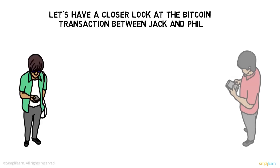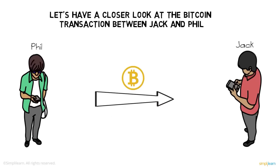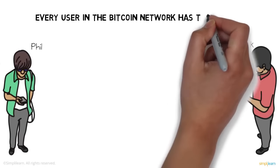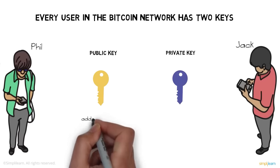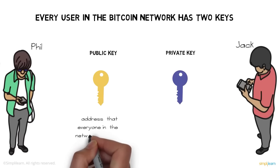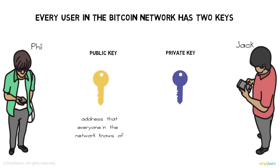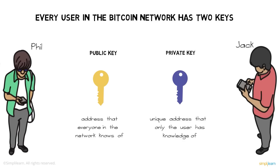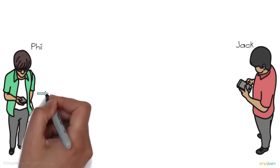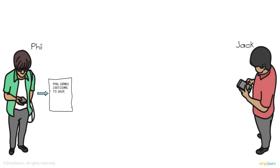Now let's have a closer look at the Bitcoin transaction between Jack and Phil. Every user in the Bitcoin network has two keys: a public key and a private key. The public key is an address that everyone in the network knows, like an email address. The private key is a unique address only the user has knowledge of, like a password.